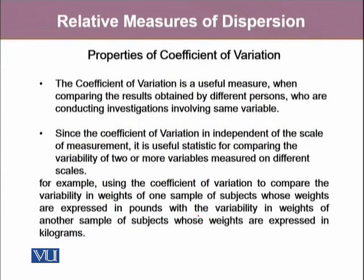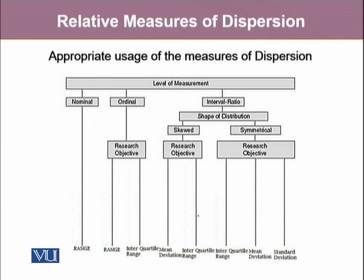The coefficient of variation is a very useful measure when comparing more than one data set, especially when results are obtained from different persons conducting investigations involving the same variable. Since the coefficient of variation is independent of the scale of measurement, it is a useful statistic for comparing variability of two or more variables even with different units or measured on different scales — for example, comparing weights expressed in pounds with weights expressed in kilograms. It is a much more reliable estimate when two different data sets are measured on different units.